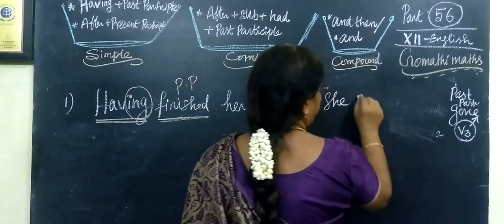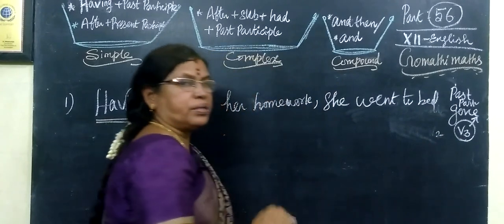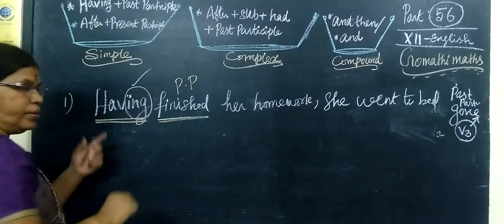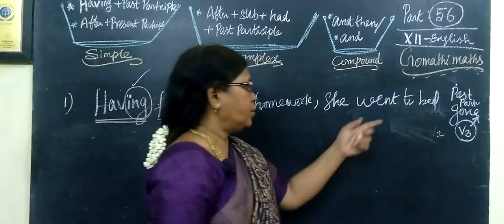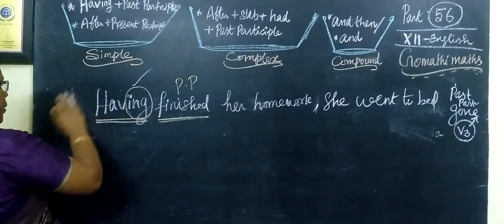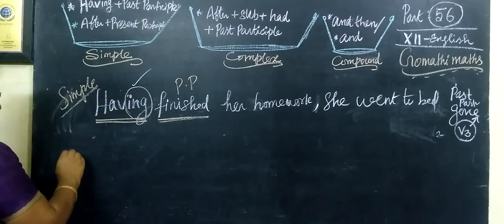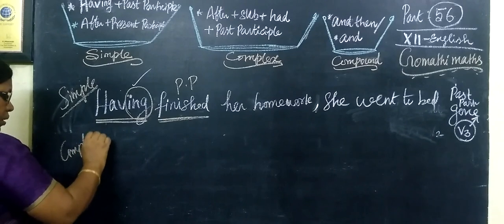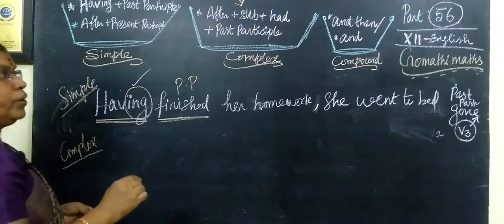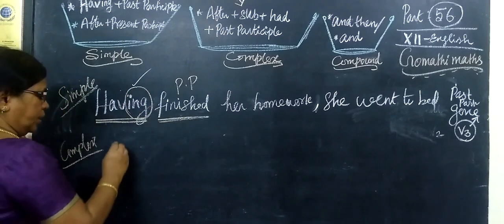She went to bed. So this is a simple sentence. In a simple sentence, the structure is having plus ing form, then past participle. For the complex sentence, the structure is: after plus subject plus had plus past participle.